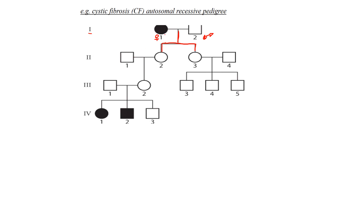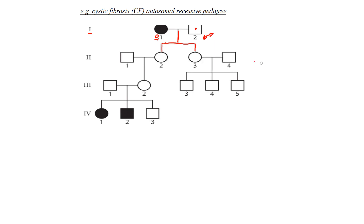The males shown connected to the daughters have married into the family — they are not blood relatives of generation one. The colored or shaded-in portion means that person is affected by the disorder, in this case cystic fibrosis. Heterozygous individuals are often shown with a dot, but in most cases you have to determine who the heterozygous parents are yourself.